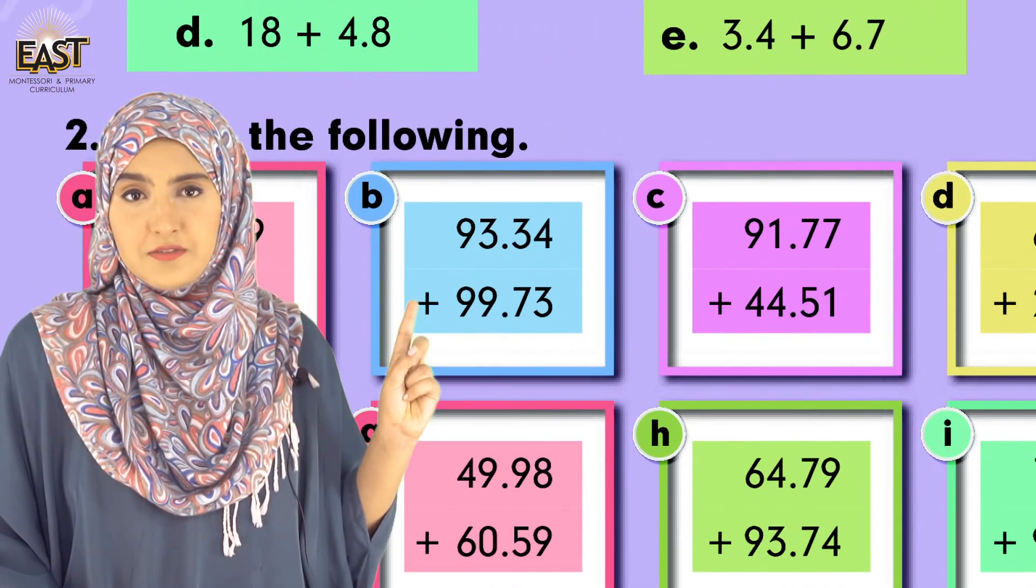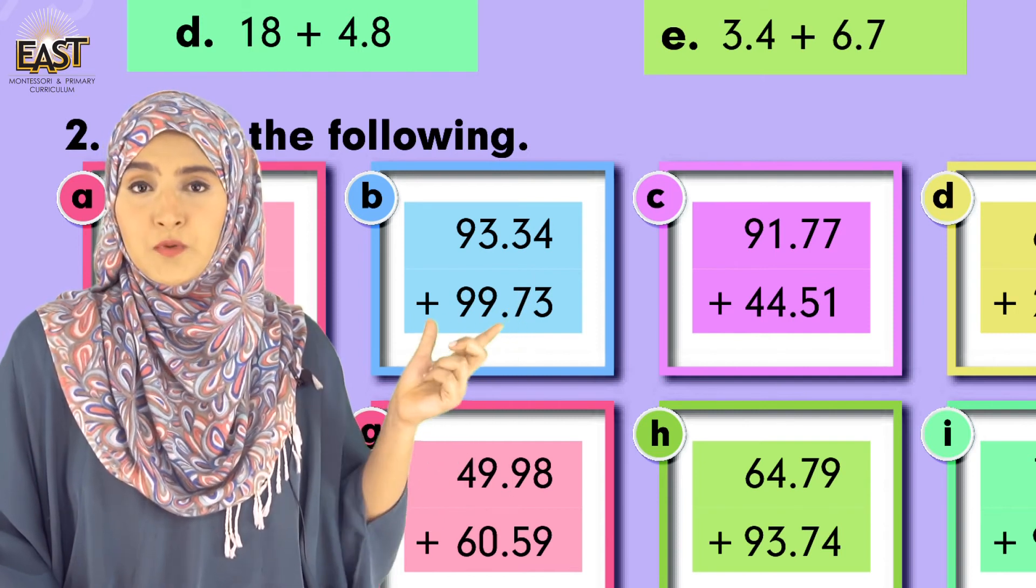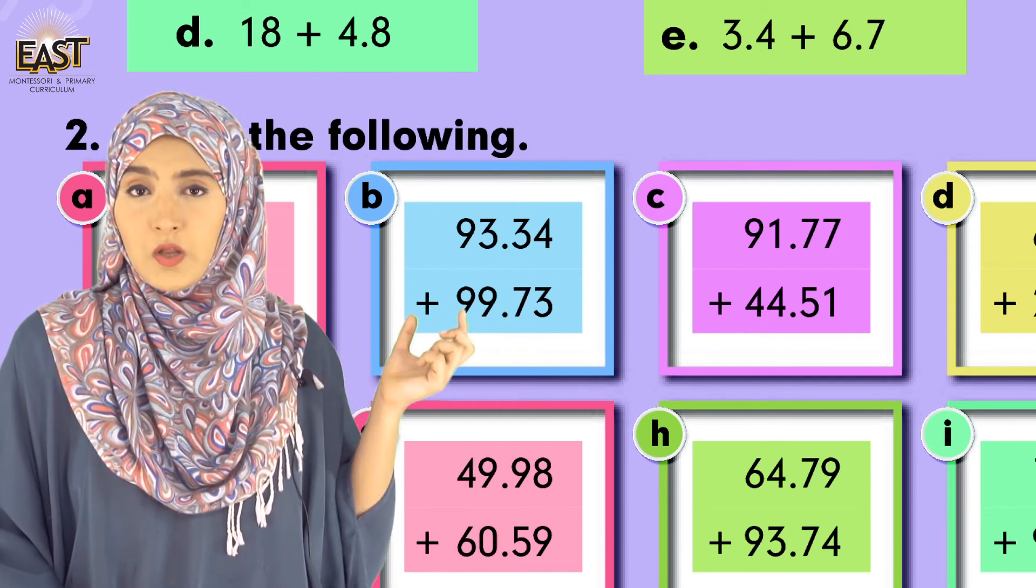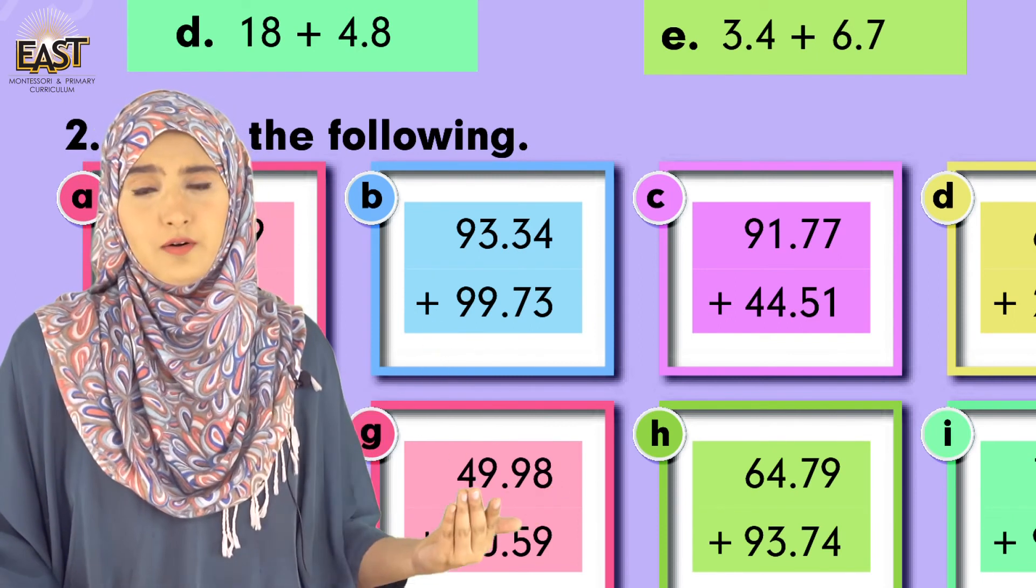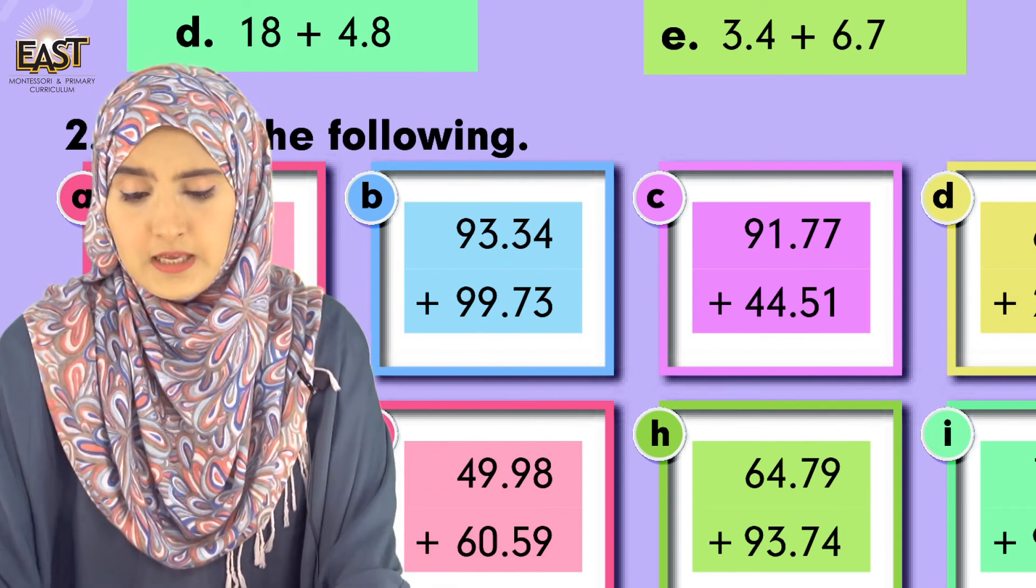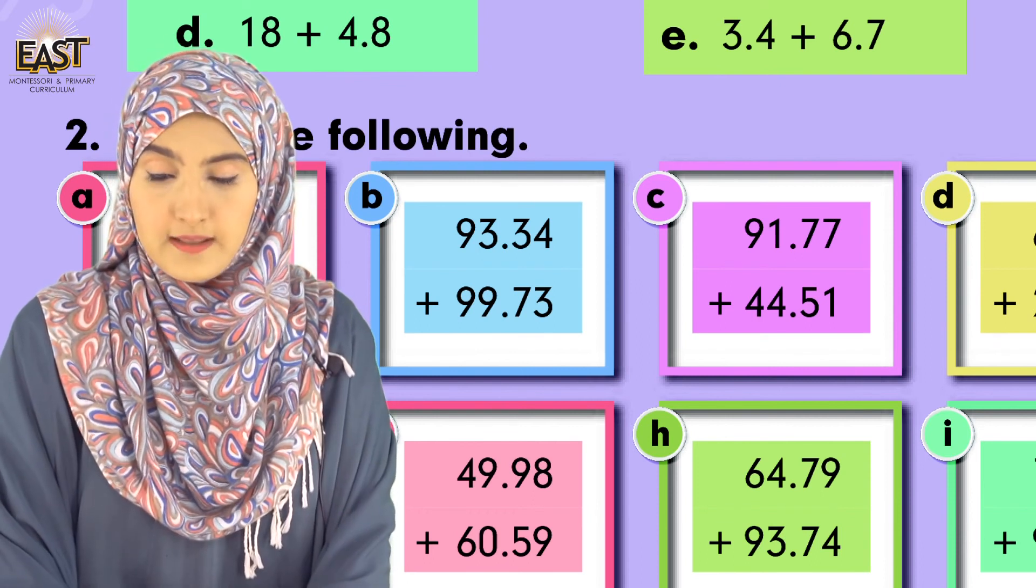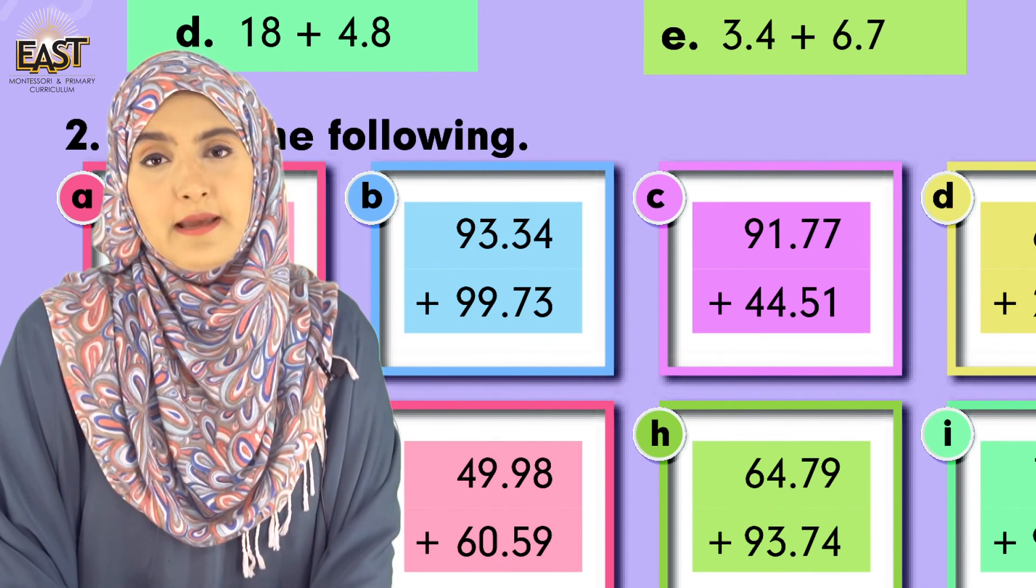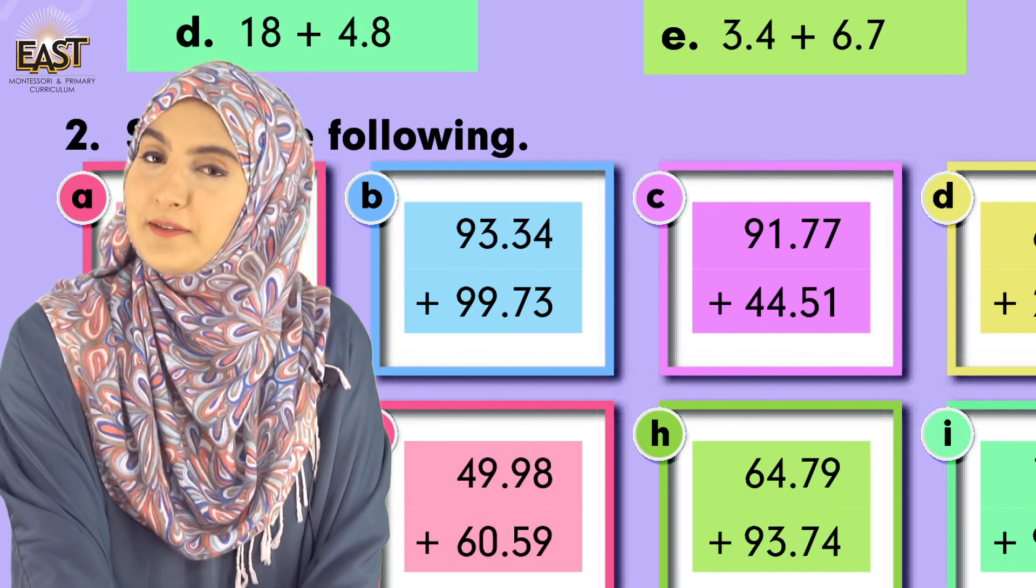Now this next part has been solved for you: 93.34 plus 99.73. Write it in column format - decimal below decimal, then start adding. I'm sure this is very easy for you to solve, inshallah. Don't forget to complete all the parts at home and then submit to your class teachers. We will meet in the next class. Till then take good care of yourselves and goodbye.